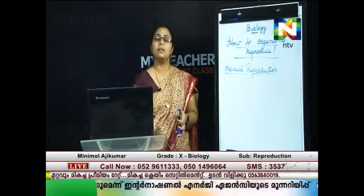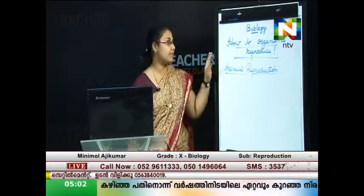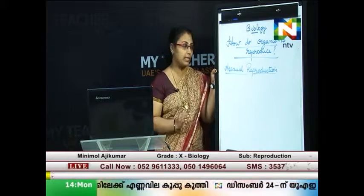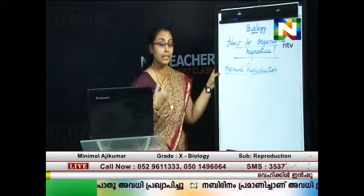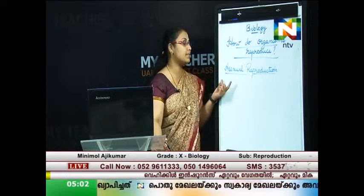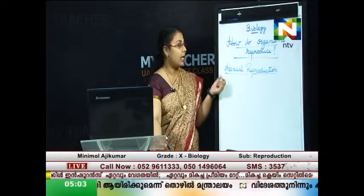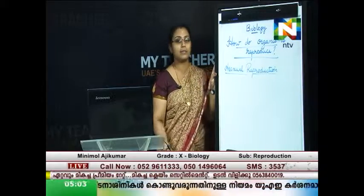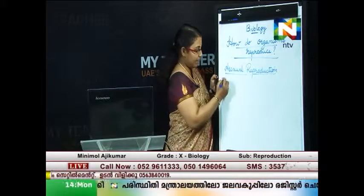Asexual reproduction — we discussed previously that reproduction is of two main modes. The first one is asexual reproduction, and it is characterized by two things. The first one is only a single parent can give new offspring; it can produce young ones of its kind. Only one single parent is required for this reproduction method, and there is no fusion of gametes in asexual reproduction.